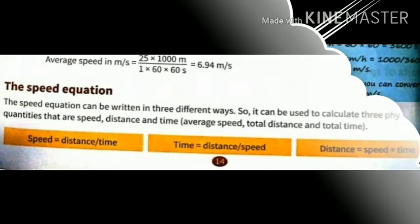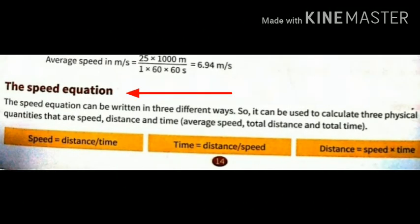Now what is the speed equation? The speed equation can be written in three different ways, so it can be used to calculate three physical quantities: speed, distance, and time.